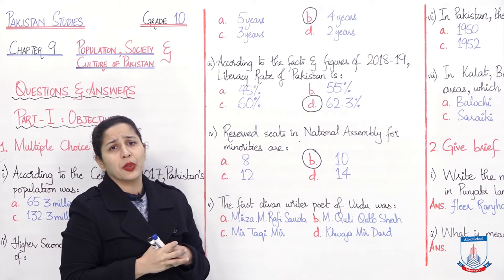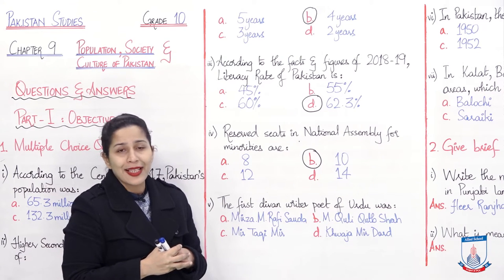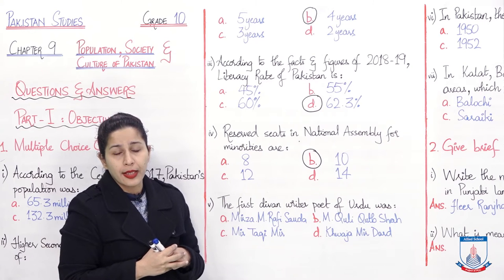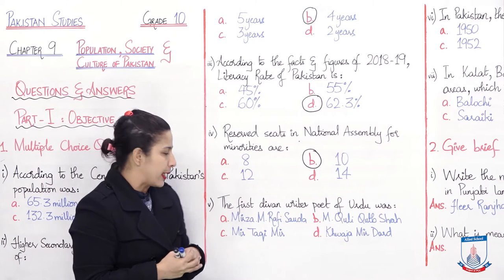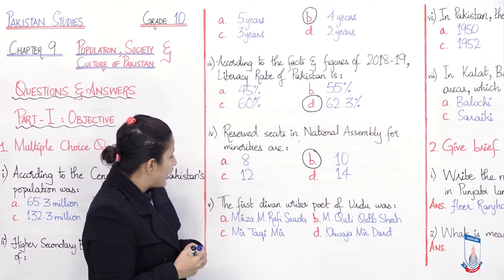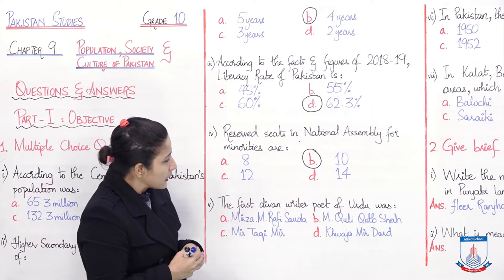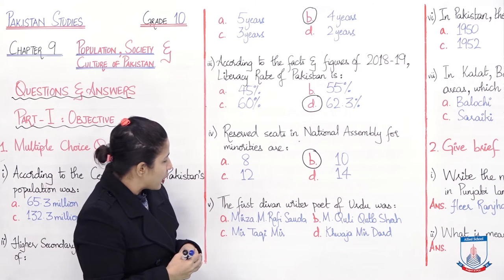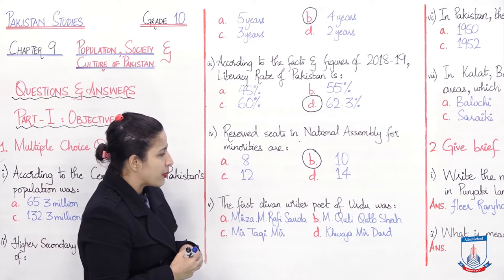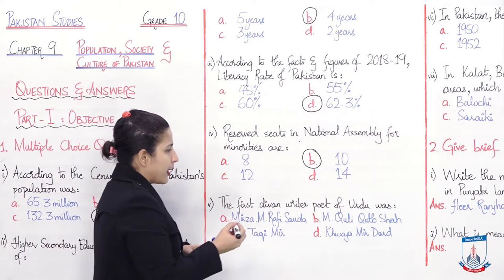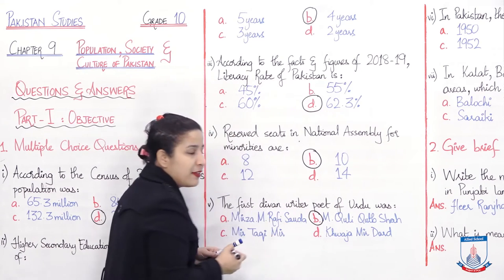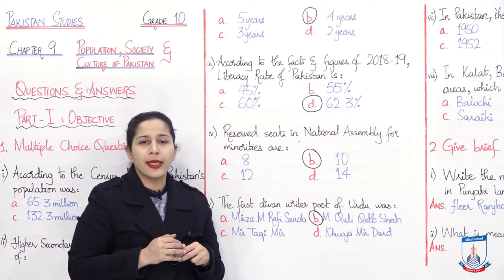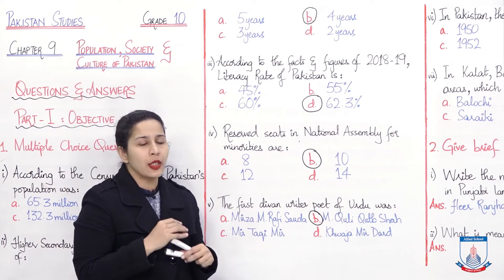Fifth question: The first Diwan writer poet of Urdu was? Diwan means a collection of poetry. Who wrote the first Diwan in Urdu language? We have four options: Mirza Mohammad Rafi Sauda, Mohammad Quli Qutub Shah, Mir Taqi Mir, and Khwaja Mir Dard. It was Mohammad Quli Qutub Shah who first wrote Diwan in Urdu language.